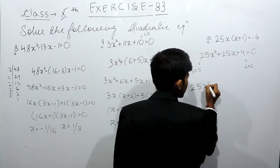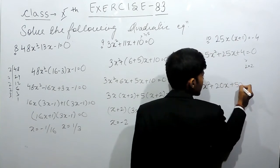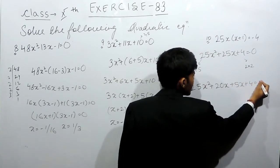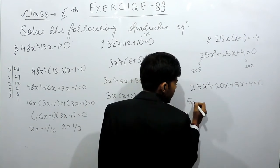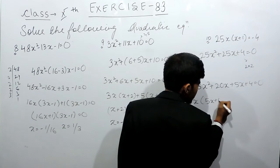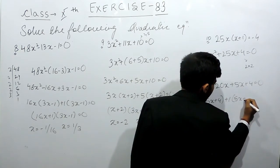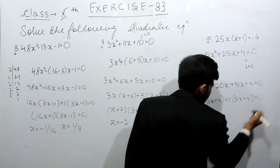So 25x² + 20x + 5x + 4 = 0. So 5x is common, that will be 5x + 4, and plus 1 is common, that will be 5x + 4, and it is equal to 0.